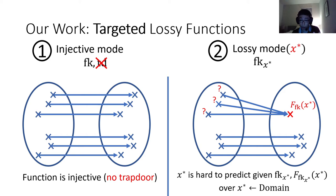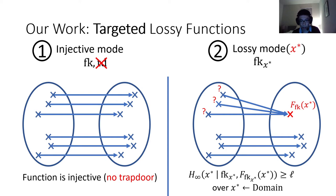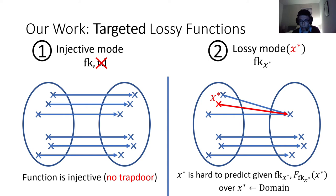The lossiness will only be with regard to this particular target X star. So if I give you the output of the function in lossy mode with respect to X star applied on X star, then it's information-theoretically hard to come up with the exact input I started from. Furthermore, because the function key is tied to X star, we require this hardness to hold even given the function key fk. This is defined over an experiment where X star is sampled randomly in the domain, and can be rephrased in terms of conditional average min-entropy of X star.